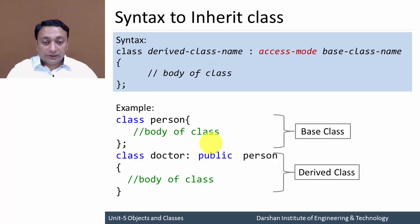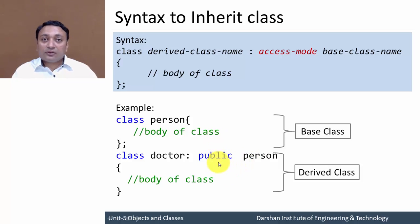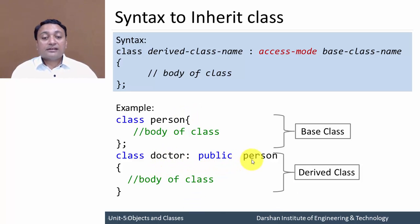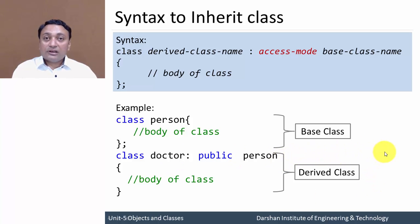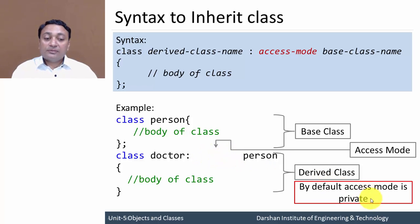The new access mode introduced here is protected — we already know public and private. If the access mode of the base class is public, then all public members of the base class become public members of the derived class. A derived class can also inherit from more than one class by mentioning multiple class names. If you do not specify an access mode, it defaults to private.